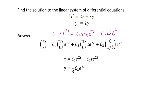Reading off the components: x equals c1·(1)·e^(2t) plus c2·(1)·t·e^(2t), since the w-component for x is 0. And y equals c2·(1/3)·e^(2t), since the v-component for y is 0 and the w-component gives 1/3. That's the general solution. I hope this clarifies how to handle the case when you have multiplicities in your eigenvalues.